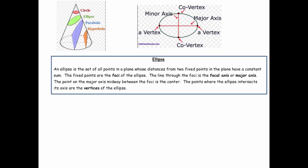The next conic we're going to look at is an ellipse. An ellipse is defined to be the set of all points in the plane whose distances from two fixed points in the plane have a constant sum.